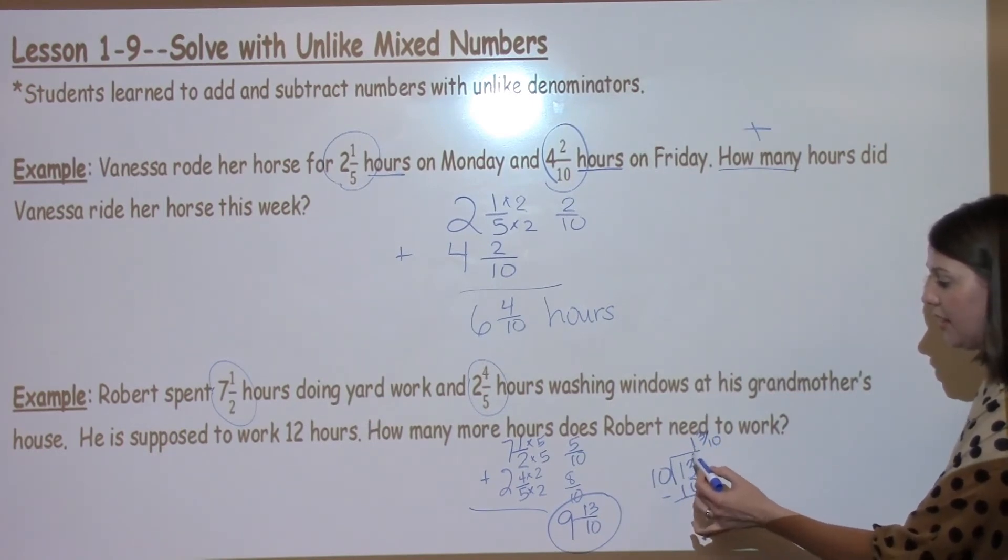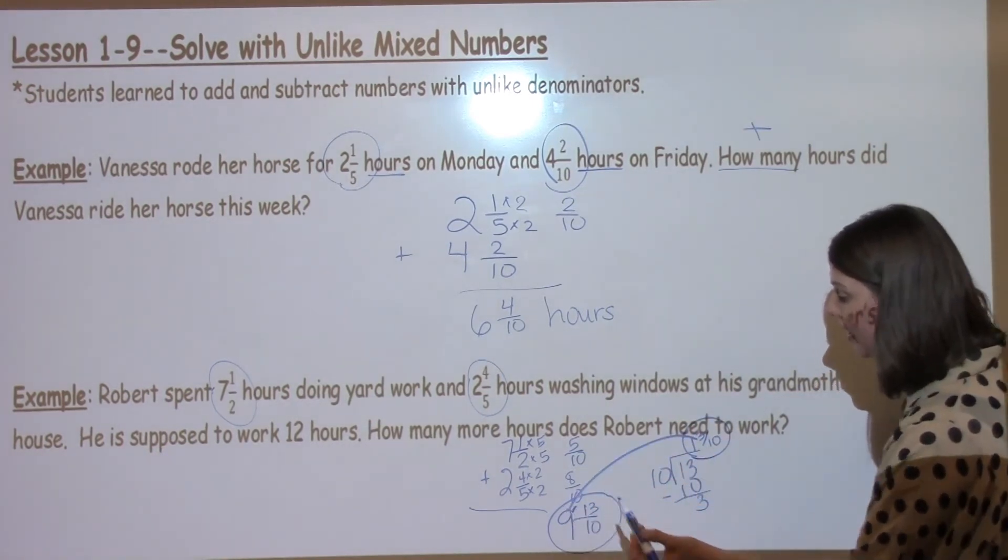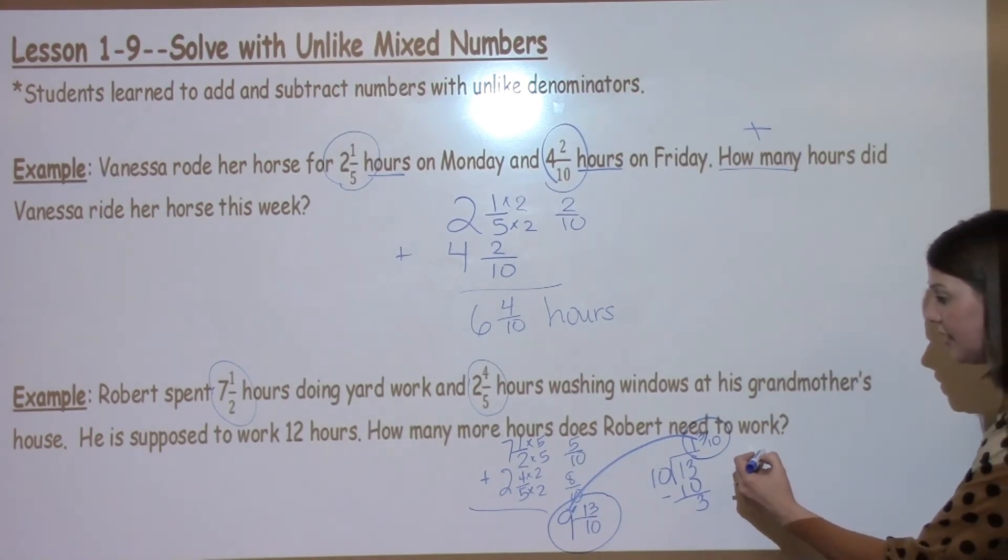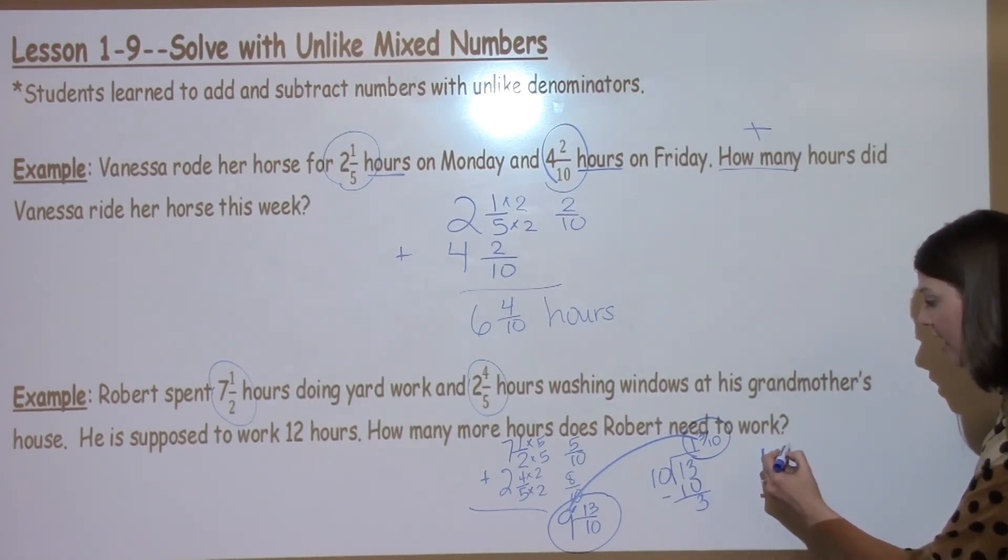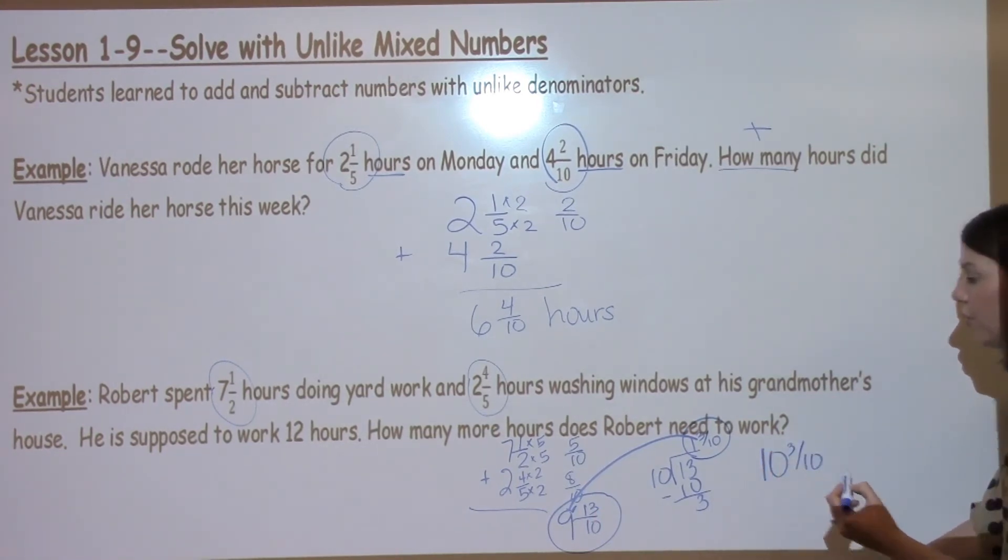So I've got 1 and 3 tenths, which I need to now add to my 9. So I've got 10 and 3 tenths hours, which Robert has worked.